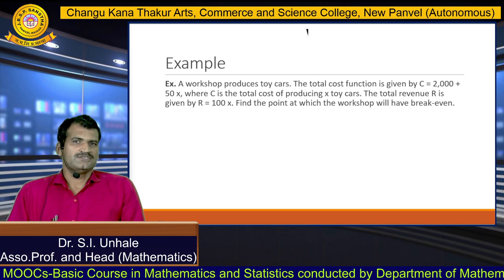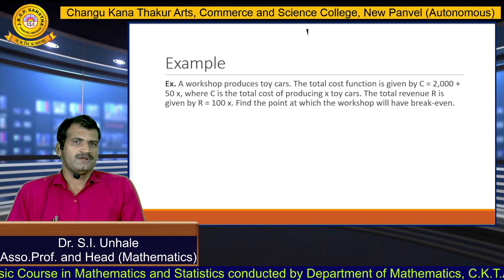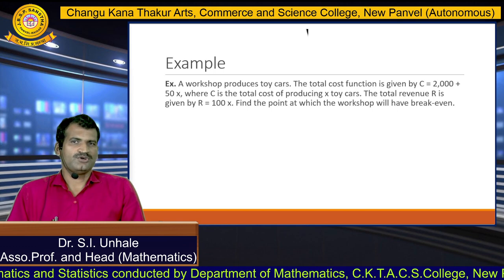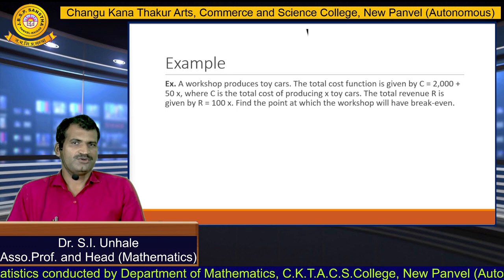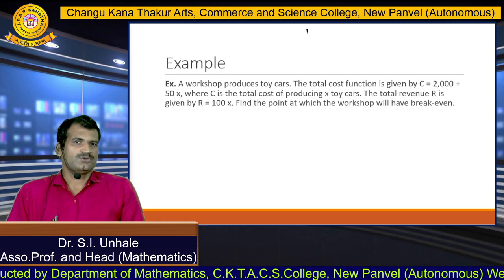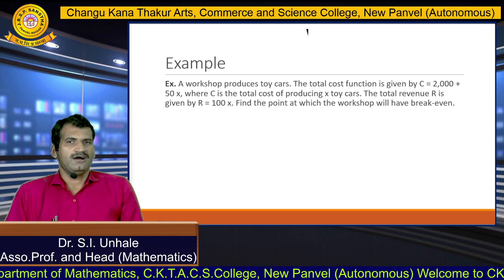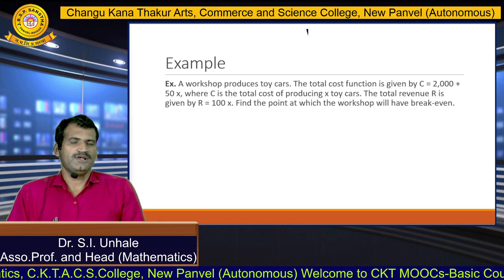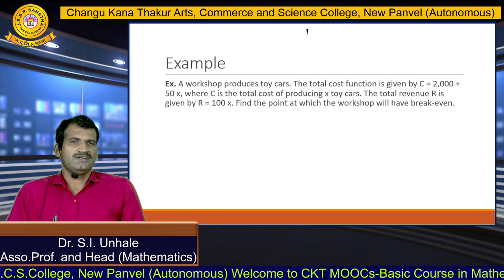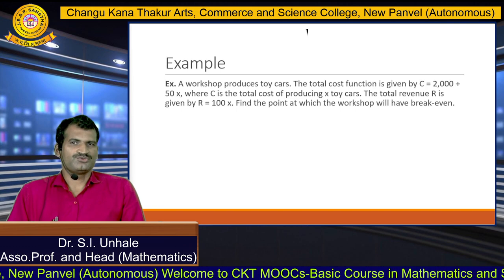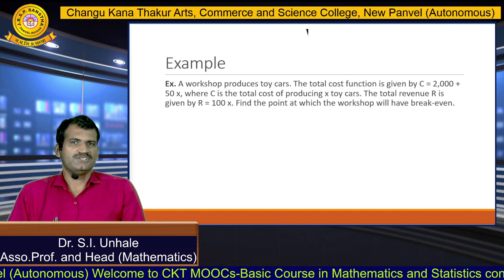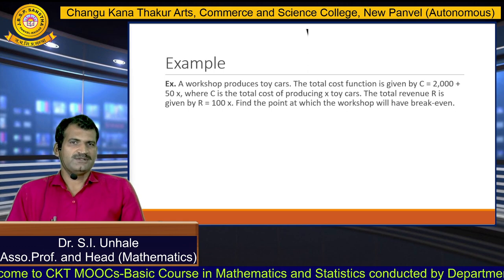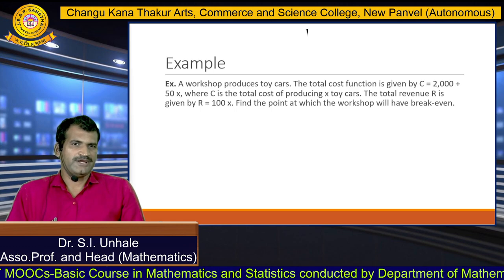See the example: suppose a workshop produces toy cars. The total cost function is given by C equals 2000 plus 50x, where C is the total cost of producing x toy cars. The total revenue function R is given by R equals 100x. Find the point at which the workshop will have a breakeven point. In the total cost function, 2000 is the fixed cost and 50x is the variable cost.